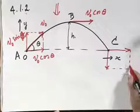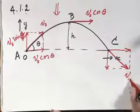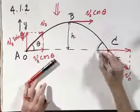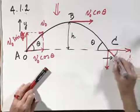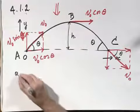So it hits the ground again at velocity v zero, whereby this angle is again theta because of the symmetry of the parabola, and this angle here is theta.